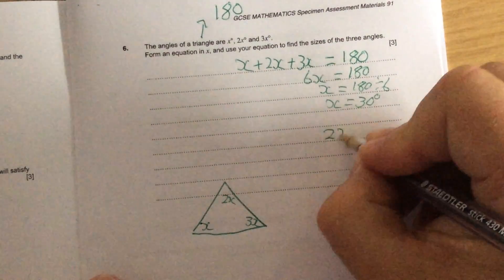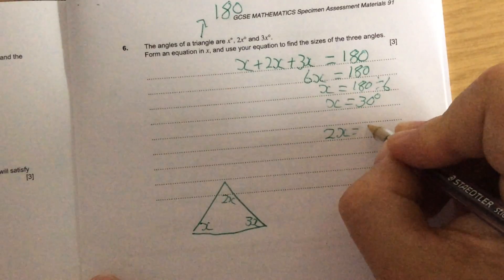So if x is 30, 2x means 2 times x. So 2 times 30, which is 60.